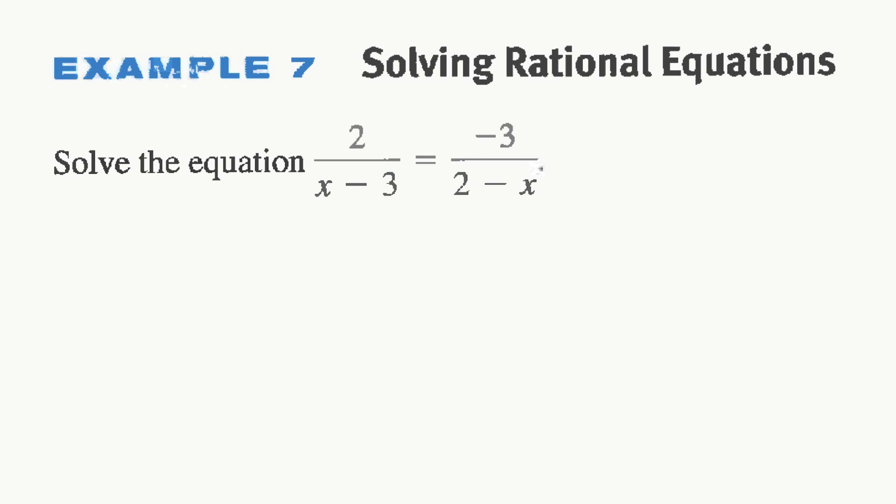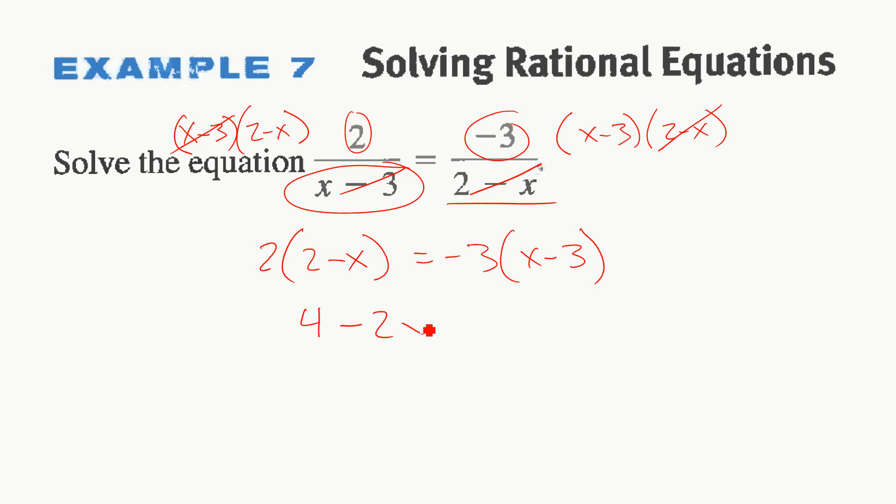All right, solving rational equations. Just another example. This is an example where you could cross-multiply, because cross-multiplying, the LCD here is x minus 3 and 2 minus x. We're going to do that over here, x minus 3 and 2 minus x. Once we cancel, you'll see that we have ended up multiplying both equations by the opposite denominator. This 2 by this denominator, this negative 3 by this denominator. So cross-multiplying is just a shortcut for using this LCD technique. So we'll clean this up. 4 minus 2x equals negative 3x plus 9. And let's add 3x to both sides. So those cancel. And we'll minus 4 to both sides. Those cancel. And what do we have here? x equals 5.